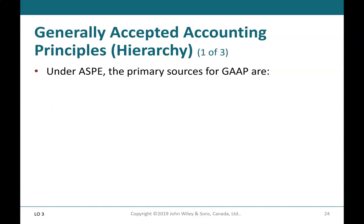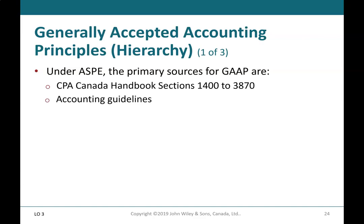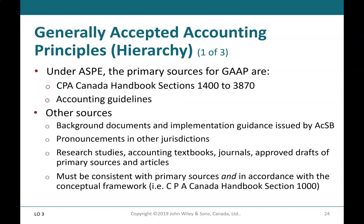Generally accepted accounting principles hierarchy (1 of 3): Under ASPE, the primary sources for GAAP are CPA Canada handbook sections 1400 to 3870 and accounting guidelines. Other sources include background documents and implementation guidance issued by ACSB, pronouncements in other jurisdictions, research studies, accounting textbooks, journals, approved drafts of primary sources and articles. These must be consistent with primary sources and in accordance with the conceptual framework, i.e., CPA Canada handbook section 1000.